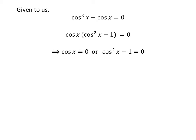This implies either cos x = 0 or cos²x - 1 = 0.